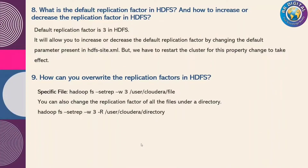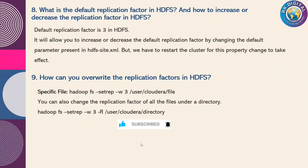If you want to increase the replication factor from three to six, you update the value to six in hdfs-site.xml. If you want to decrease it from three to two, that modification is also allowed. Once any change is made in hdfs-site.xml, the cluster must be restarted for the changes to take effect.